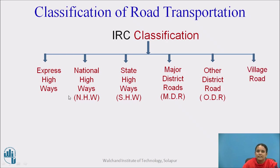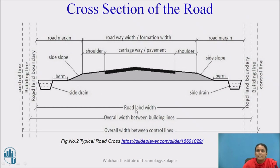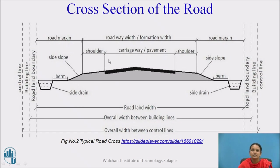In this lecture, we will study the classification of roads. Here is the typical cross section of the road. In this road cross section, we can see the road land width, roadway, carriageway, shoulders, and berms. We will see all these terms in detail further.